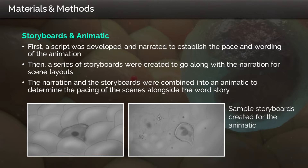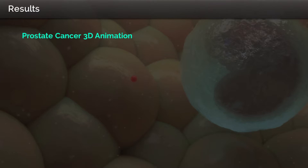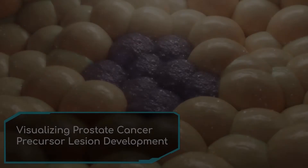A script was first developed to establish the word choice and pacing of the final animation. Storyboards were then created to be used as visual reference for scenes matching the script. Finally, the script and storyboards were stitched together to create a 2D animation known as an animatic. I will now play the final animation created for this project.